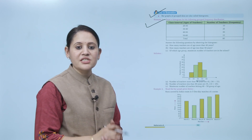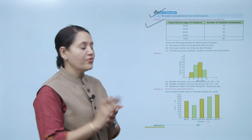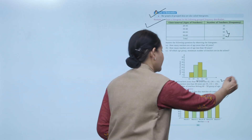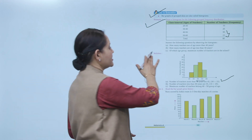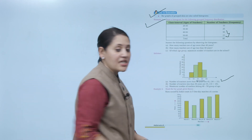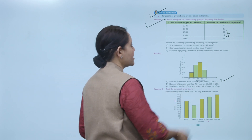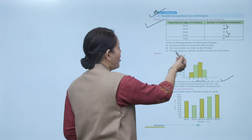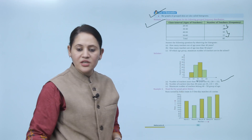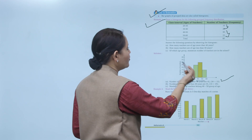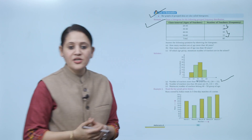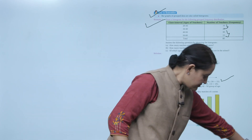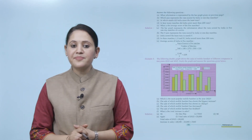First question: how many teachers are of age more than 40 years? That is 30 + 15 = 45. Next: how many teachers are of age less than 40 years? That is 10 + 25 = 35. Of which age group is the maximum number of teachers? That is 40–50, with 30 teachers. Like this you can answer questions by looking at the histogram.